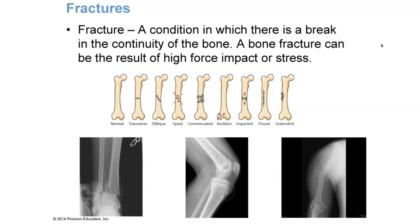The greenstick fracture is the most common in children. If you take a healthy stick off a tree and try to break it, it doesn't snap in half but instead splinters. That's what it's like for children's bones — they don't have the hardness that develops as we age, so their bones splinter rather than break cleanly in half.